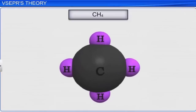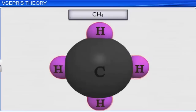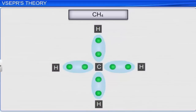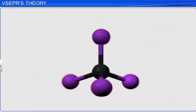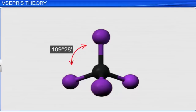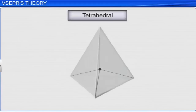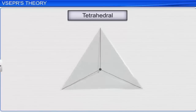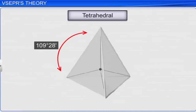In a methane molecule, four hydrogen atoms are bonded to one central carbon atom. Since the electron pairs have the same charge, they repel each other and try to stay as far away from each other as possible. As a result, all four hydrogen atoms arrange at four corners of a tetrahedron, lying at equal distances from each other. Hence, methane has a tetrahedral shape with a bond angle of 109 degrees 28 minutes.